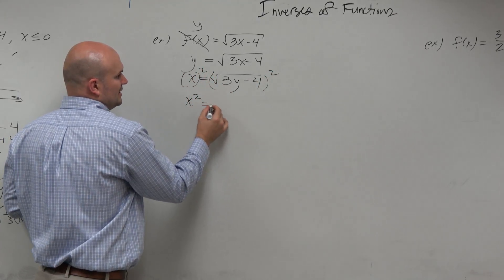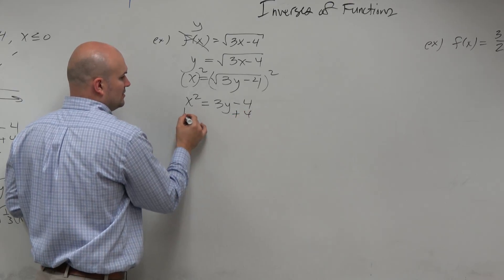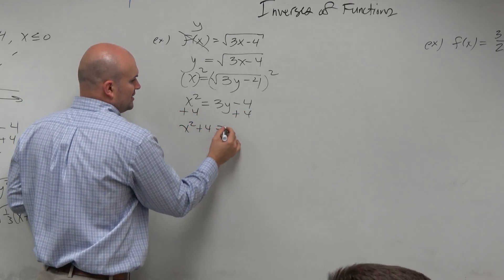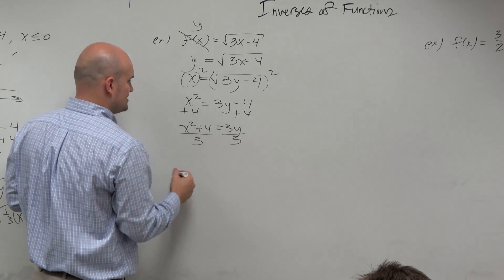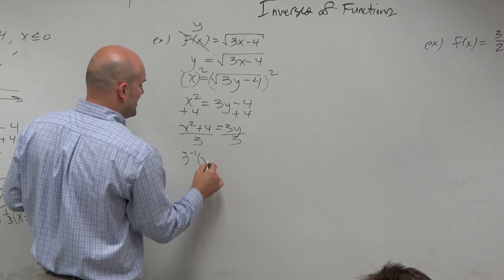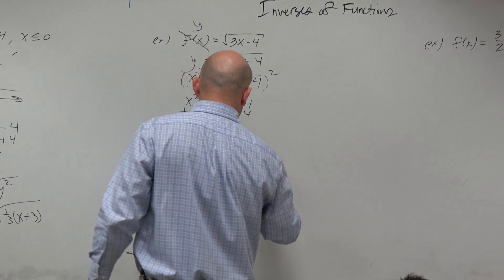So I have x squared equals 3y minus 4. Add 4, add 4. x squared plus 4 equals 3y. Then I'll divide by 3 on both sides. And I'll write this as f inverse of x equals 1 third x squared plus 4.